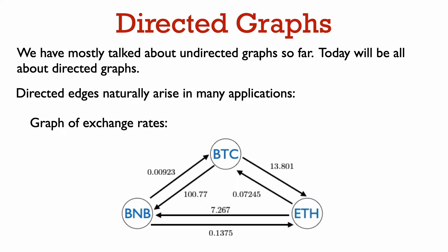Another example we mentioned before is a graph of exchange rates. The rate for changing Bitcoin into Ethereum is different from the rate for changing Ethereum into Bitcoin. So we can represent this by a weighted and directed graph.